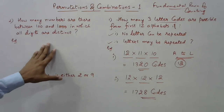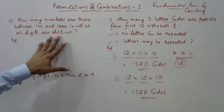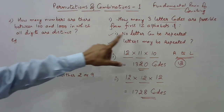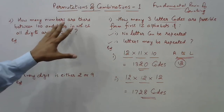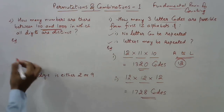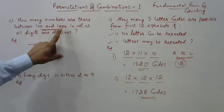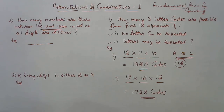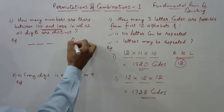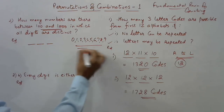Now let's use this concept for another question: how many numbers are there between 100 and 1000 in which all digits are distinct? Between 100 and 1000 we have only three-digit numbers, from 101 to 999. We are told all digits must be distinct, meaning repetition is not allowed. There are 10 digits in total: 0, 1, 2, 3, 4, 5, 6, 7, 8, and 9.